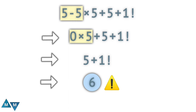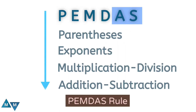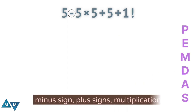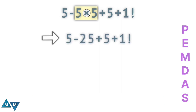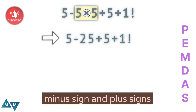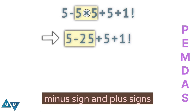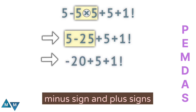To get the correct answer, let's use the PEMDAS rule. In this expression, we have a minus sign, plus signs, and a multiplication sign. Multiplication has higher priority, so 5 times 5 is our first move, which equals 25. The expression becomes 5 minus 25 plus 5 plus 1 factorial. Now we have only minus and plus signs, which share the same priority, so we go left to right. 5 minus 25 equals minus 20. Then minus 20 plus 5 equals minus 15. The expression becomes minus 15 plus 1 factorial.